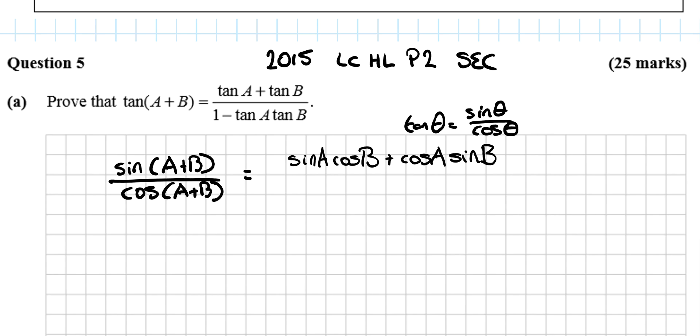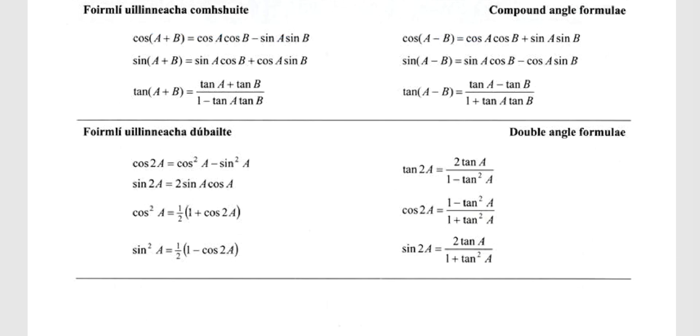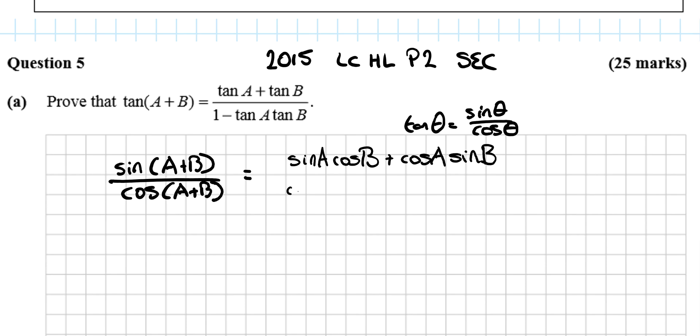And the bottom one is going to be cos(A)cos(B) minus sin(A)sin(B), and we include this as one big fraction.